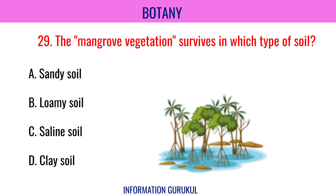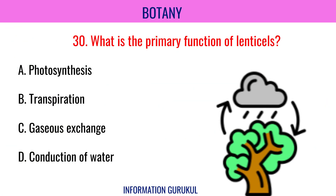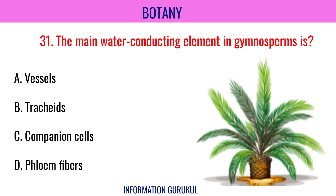The mangrove vegetation survives in which type of soil? Saline soil. What is the primary function of lenticels? Gaseous exchange. The main water-conducting element in gymnosperms is tracheids.